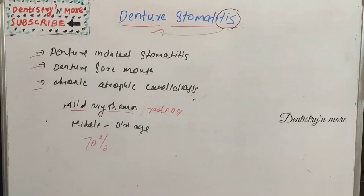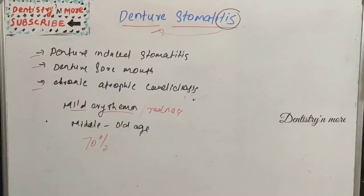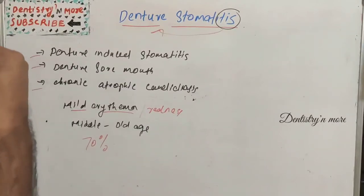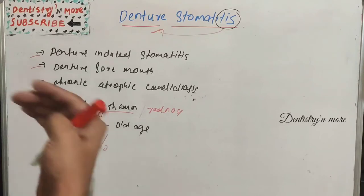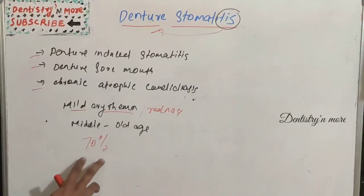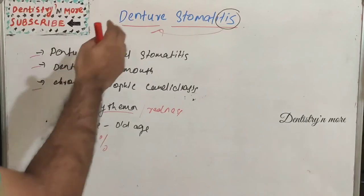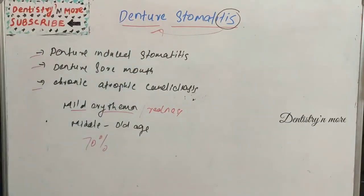It is commonly seen in middle to old age people, as complete denture wearers are typically in the 50-plus or 60-plus age category. Most cases of denture stomatitis are seen in the maxilla because of the greater coverage area of the denture. Around 70% of denture wearers have this problem.